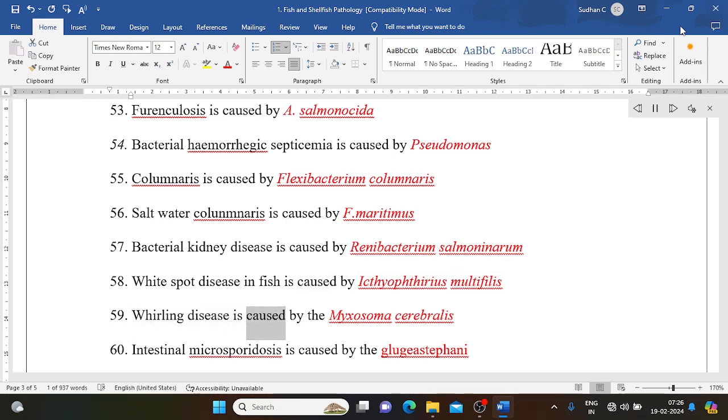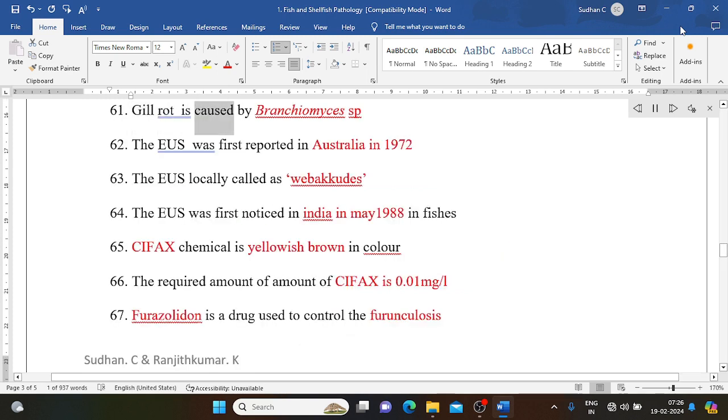Whirling disease is caused by Myxosoma cerebralis. Intestinal microsporidosis is caused by Glugea stephani. Gill rot is caused by Branchiomyces sp.